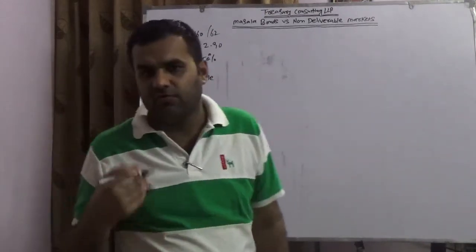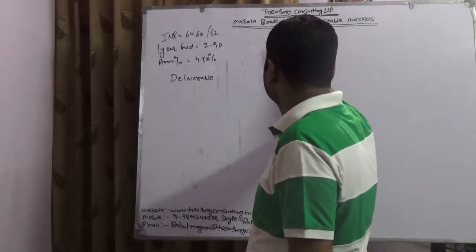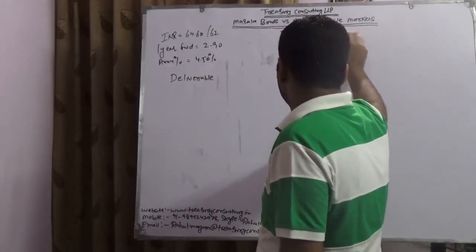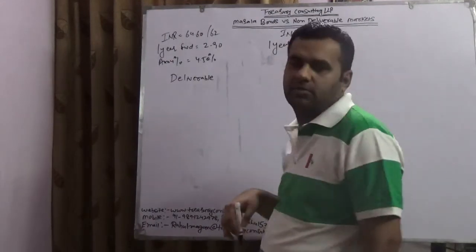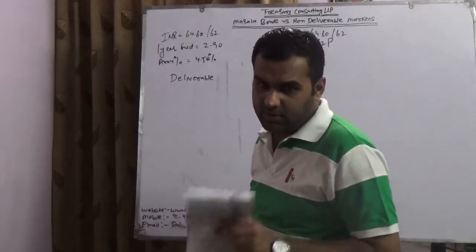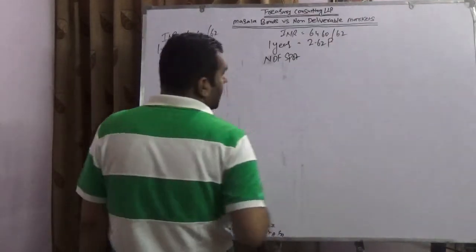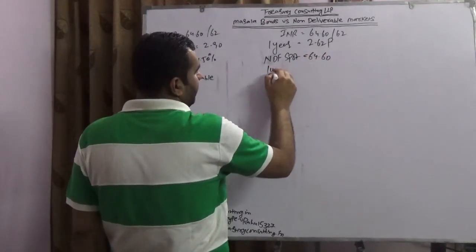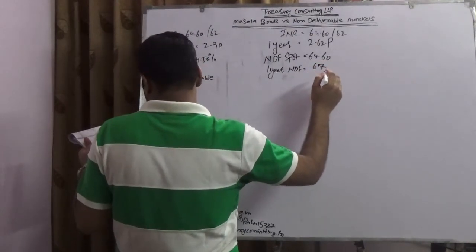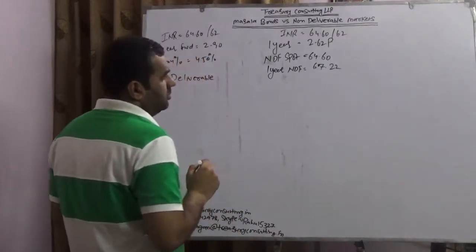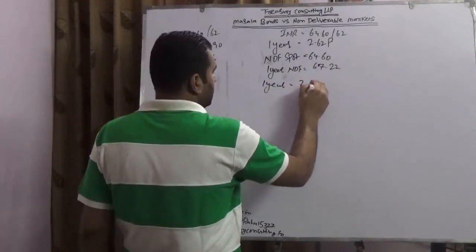Let's come to the non-deliverable part. Here, Indian rupee is also trading at 64.60/62. The one-year forward premium is 2 rupees 62 paisa, which is wonderful. I know most people don't agree with me, and here is the proof. The non-deliverable forward spot is 64.60, while one-year non-deliverable forward is trading at 67.22.